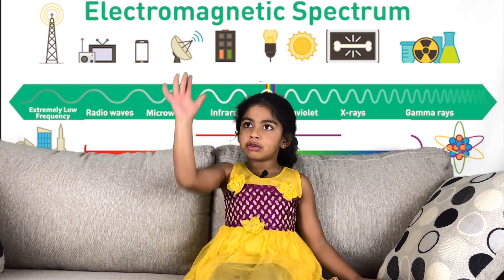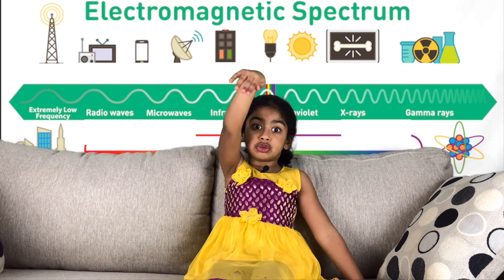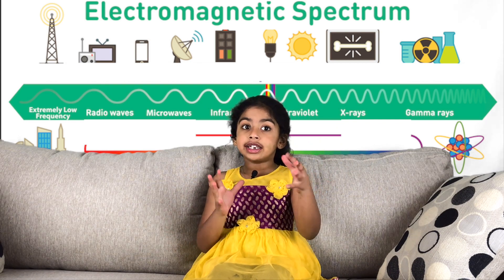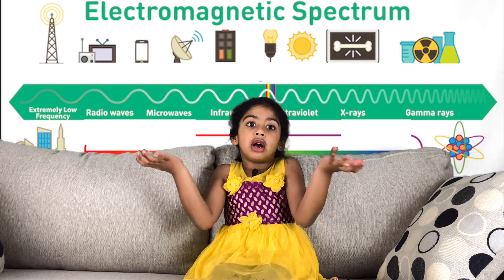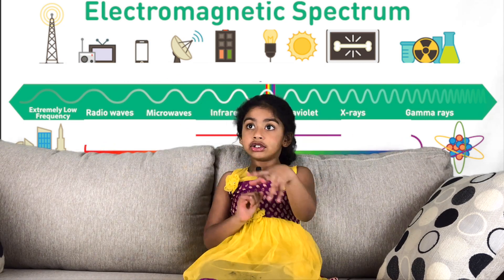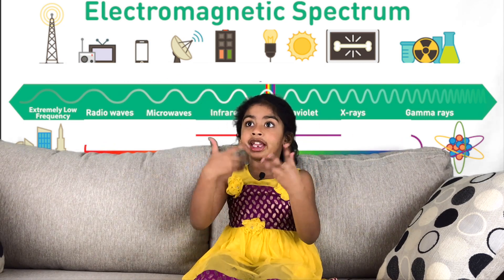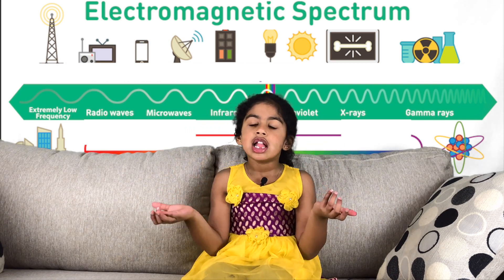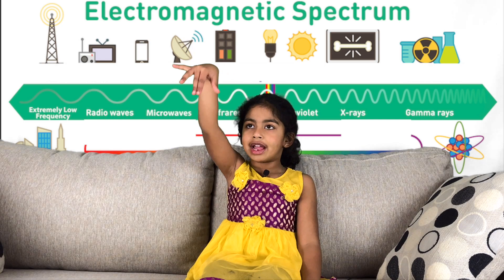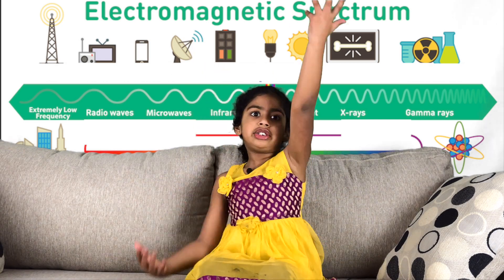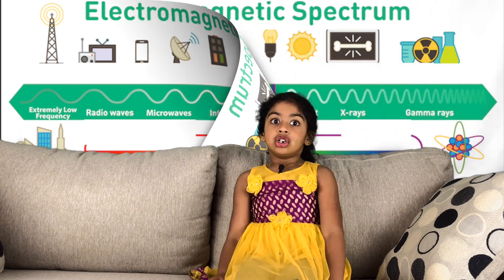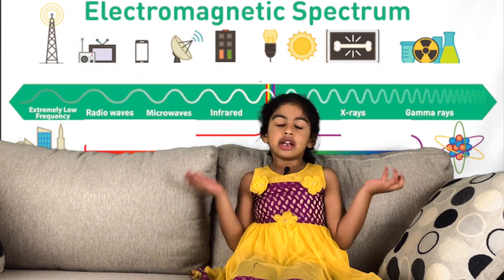The electromagnetic waves carry the message to dad's phone. Let's say mom says 'I'm having pizza' and she sends it to dad. Her phone's antenna will turn it into another language, and then those electromagnetic waves carry it to dad's phone, where his antenna turns it back into English.